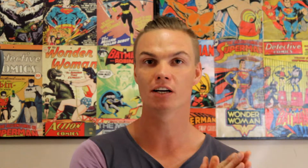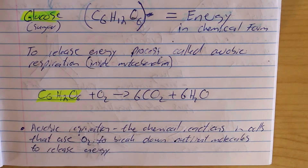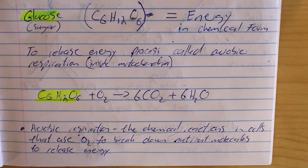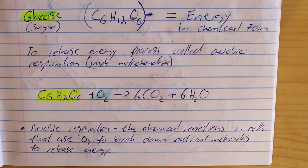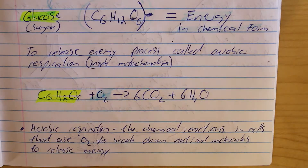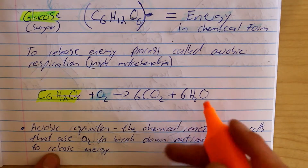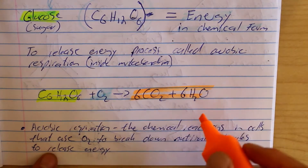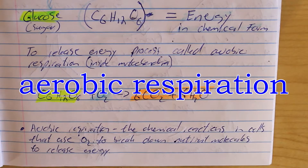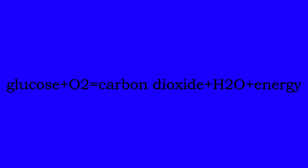In aerobic respiration, glucose reacts with oxygen from the air we breathe, and this results in carbon dioxide and water. Energy is also produced. So glucose is combined with oxygen to produce carbon dioxide — what we breathe out as a byproduct — as well as energy. This is a very efficient process.